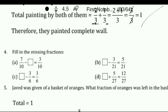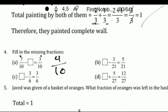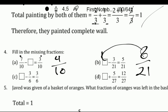Next, fill in the missing fraction: 7 upon 10 minus what number equals a certain value. We know 7 minus 3 is 4, so the answer is 4 upon 10. Next: same denominator 21, and here we have 3 and 5. So 8 upon 21 minus 3 upon 21 gives 5 upon 21. Here we write 6 upon 6. Like this, you can solve.